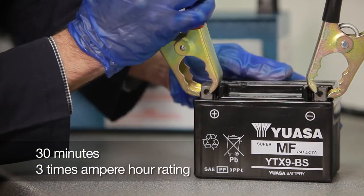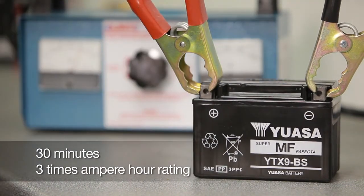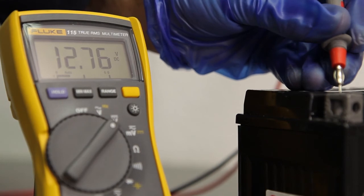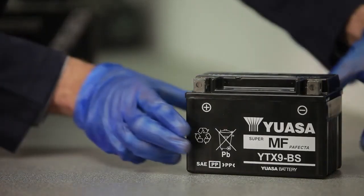Then load test it at three times its ampere hour rating for 15 seconds, or use an automatic battery tester to determine the battery's condition and check the voltage. This should be a minimum of 12.6 volts on a 12-volt battery. The battery is then ready to be fitted.